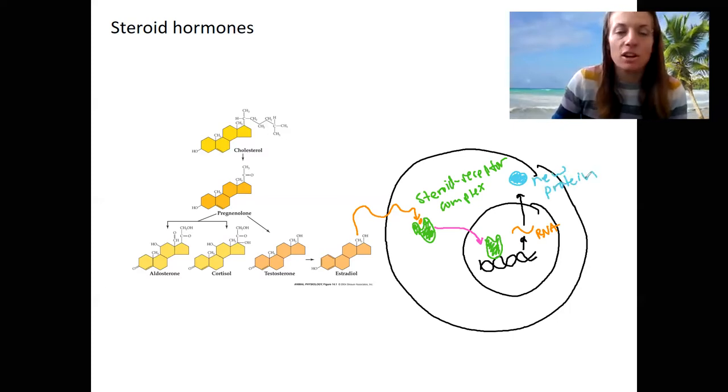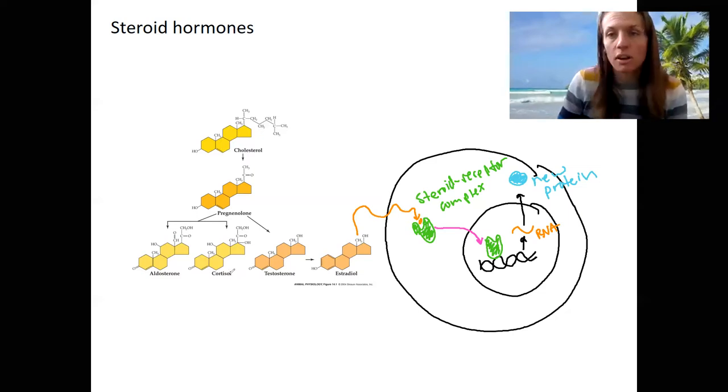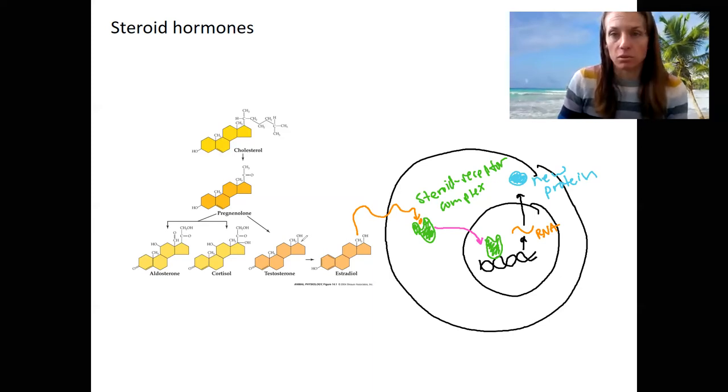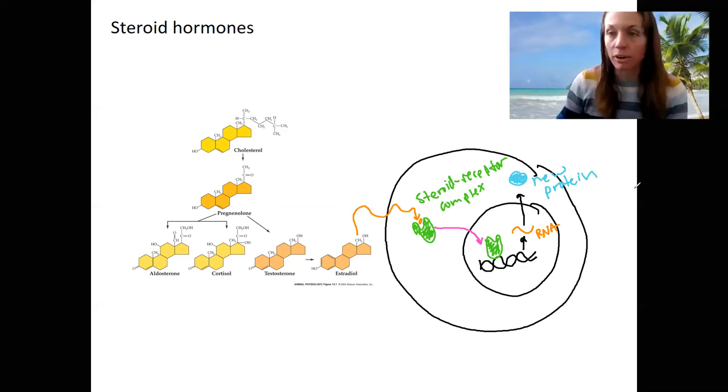This is a mechanism of action. You might make for cortisol proteins involved in immune, actually immune suppression, metabolic changes. For testosterone, you might make skeletal muscle proteins, skeleton growth factors, kind of stuff like that. Okay. That's steroid hormones and their actions.